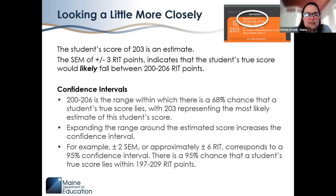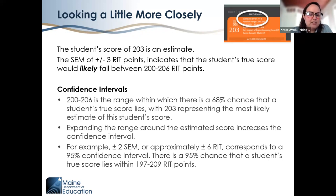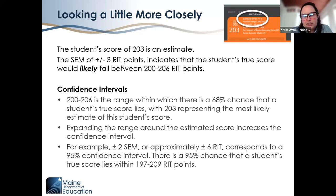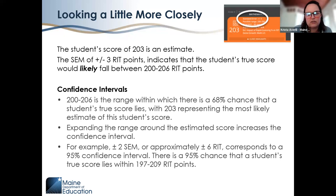Looking at what we mean by 'likely': 200 to 206 is the range within which there's a 68% chance the student's true score lies, with 203 as the most likely estimate. If we expand that range and multiply the SEM by two — getting approximately plus or minus six RIT points — there's a 95% chance the true score lies within 197 to 209 RIT points. It's important to consider both the reported score and the range in which it likely falls.